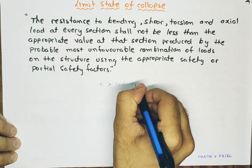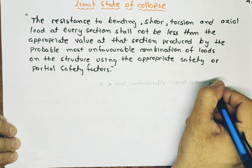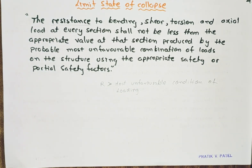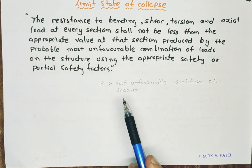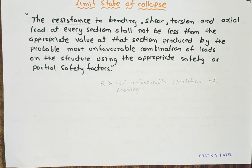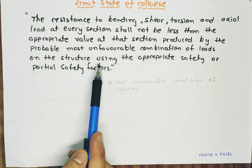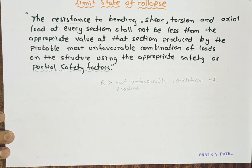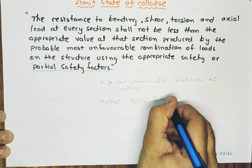The resistance should not be less than the appropriate value produced by the probable most unfavorable combination of loads on the structure. This combination of loading includes different kinds of loads acting on the structure: live load, dead load, wind load, and impact load — there are numerous combinations. But the key point is the most unfavorable conditions of loading, using an appropriate factor or partial safety factor.